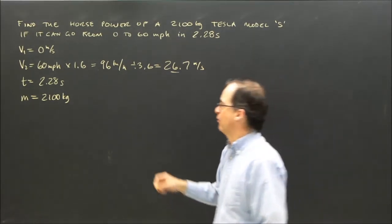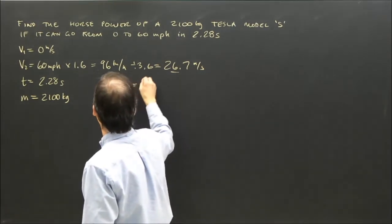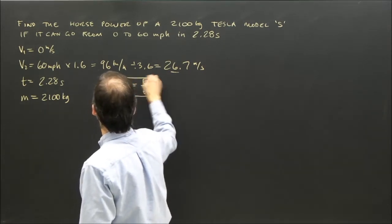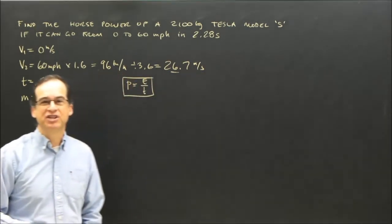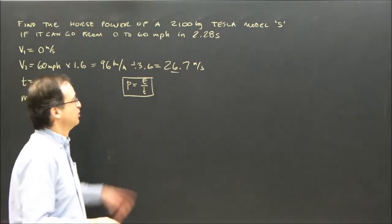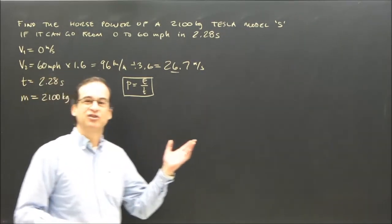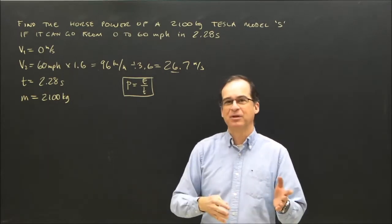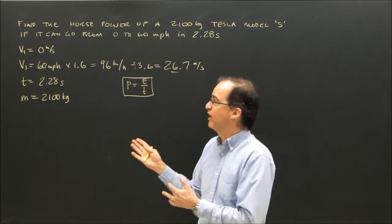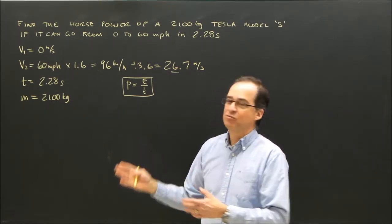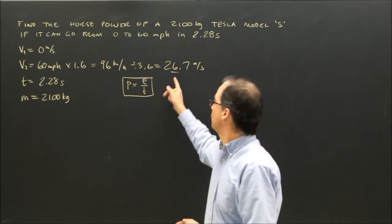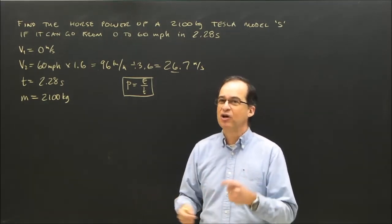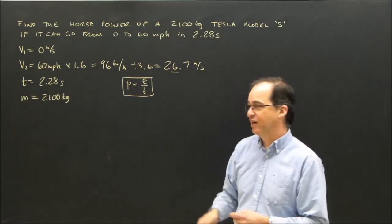I'm looking for the power. The formula is power equals energy divided by time. We need to figure out how much energy was used by the Tesla. It started at 0 meters per second and sped up, so at the beginning there was no kinetic energy. When it reached a final velocity of 26.7 meters per second, it had a lot of kinetic energy, so we need to figure out how much kinetic energy it gained.